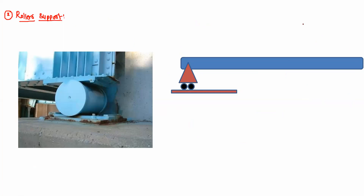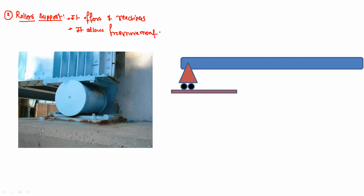The roller support offers one reaction which is perpendicular to the surface on which the roller is mounted. It offers only one reaction and allows free movement of the object or beam which is supported by it.